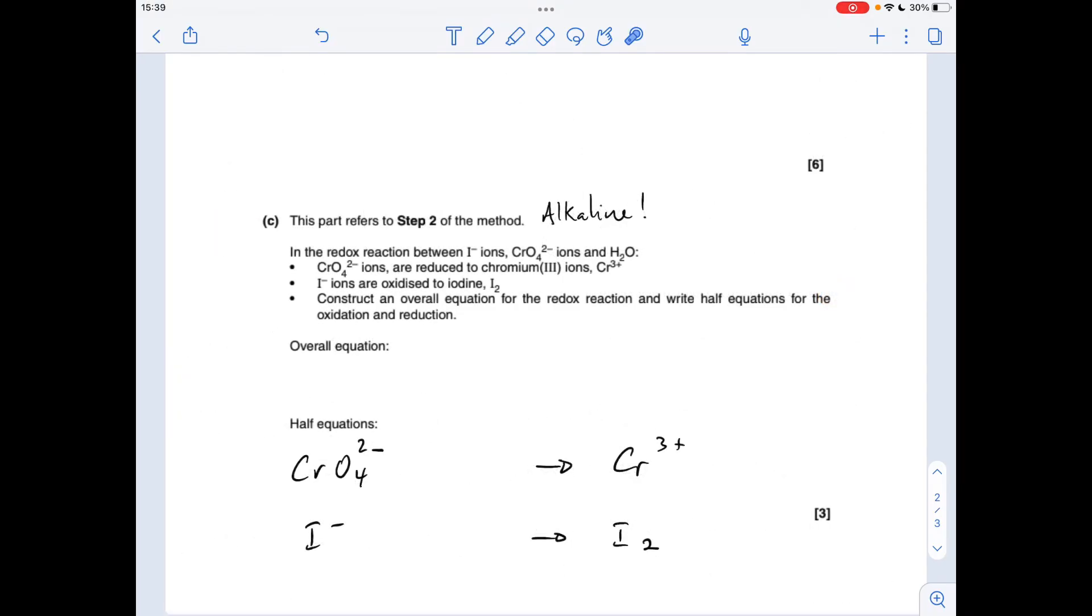So last part of the question now—we've got to come up with the overall equation for step two and the two half equations. Now I would always do the half equations first and then combine them to make the overall equation, so that's the way I'm going to do this. Now the first thing to mention is in the information about step two it says alkaline solution, so that means we're going to need to use hydroxide ions, water, and electrons when we're making these half equations if we need to.